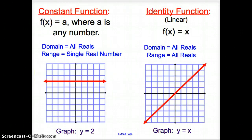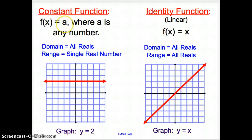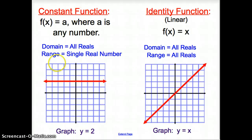Now we're going to be talking a lot about the parent graphs or functions. The first one we have is the constant function, where f of x just equals any number. This a could be any number. The domain is all real numbers, and the range is what that number is. So your graph would look something like this — for example, the equation of the constant function would be y equals 2.